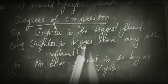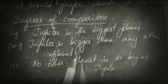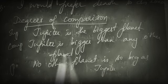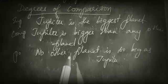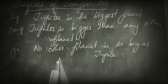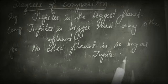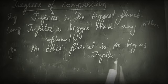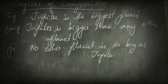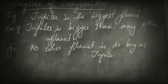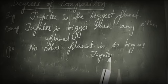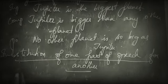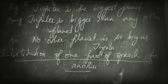The superlative 'Jupiter is the biggest planet' changes to the comparative 'Jupiter is bigger than any other planet,' and in the positive degree it becomes 'No other planet is so big as Jupiter' — or 'as big as Jupiter.' Both usages are acceptable, as explained previously in this chapter.